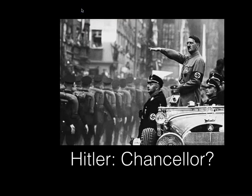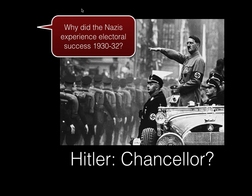I actually split this into two lessons. I was going to do it in one lesson, but that would be a bit too long and complicated. So we're looking at why Hitler was appointed Chancellor by Hindenburg in January 1933. But this first video will look at the reasons behind the electoral success of the Nazi Party between the period 1930 and 1932.